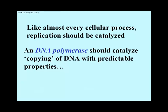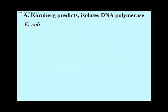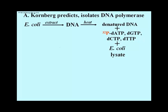Now that we know replication is semi-conservative, it was time to identify the enzyme that catalyzed the process. It was possible to make predictions about this putative enzyme: it should require a template — one of the two strands of a double helix — from which it would synthesize a complementary strand using nucleotide precursors. In Arthur Kornberg's experiment, a DNA-dependent DNA polymerase was first detected. DNA was extracted from E. coli cultures, heated to denature the double helical DNA, and the single-stranded DNA was mixed with four deoxynucleotide triphosphates and added to an E. coli lysate. One of the deoxynucleotides was radioactive so that any DNA synthesized, even a small amount, could be detected as large radioactive molecules.